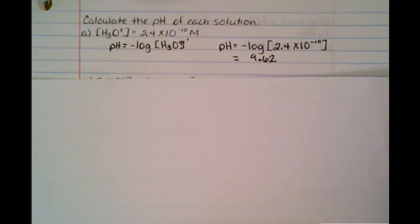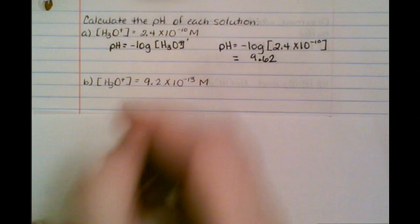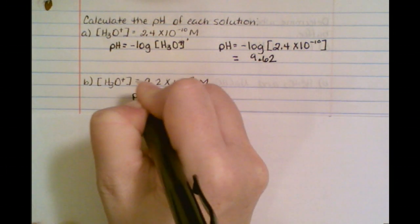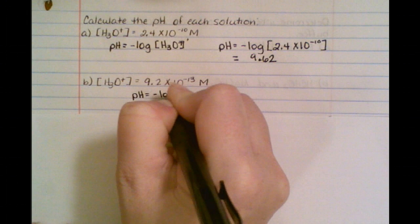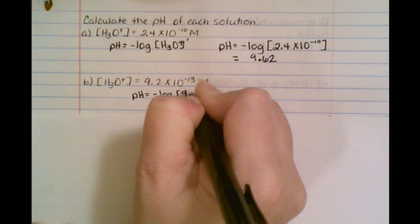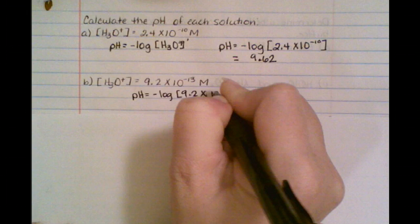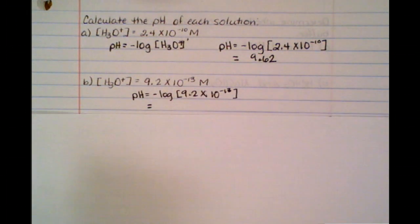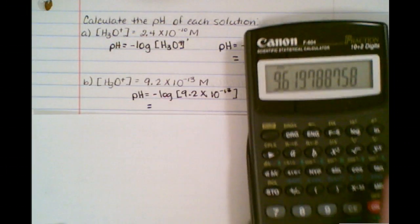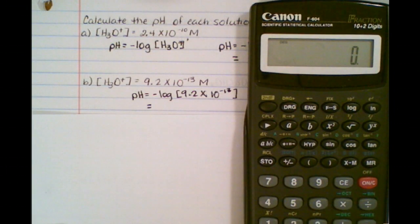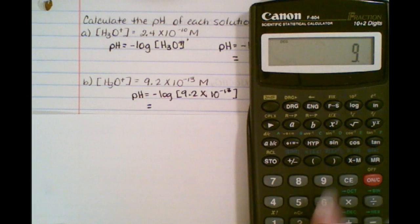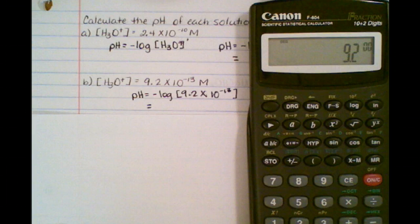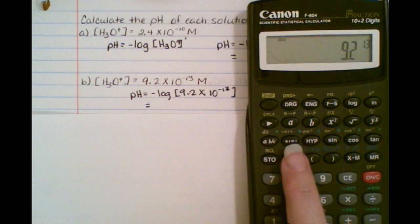Now, we want to set up the second one. So you're just going to have the pH equals the negative log of 9.2 times 10 to the minus 13th. And now, I need to put that in my calculator. So I'm going to come back over here, clear out what I had. I'm going to take 9.2 EXP or EE, and then I'm going to put 13 with a minus.